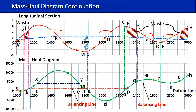Up to this point there's a fill, so the mass haul diagram is on the negative side. But from this point, the fill is reducing — fill reducing means basically on top of cut. So here there's a cut, and the volume gets collected. You see the volume collects up to this peak point, which is where you have the maximum volume — the same point where you have finished the cutting. This is the transition point where cutting changes to filling.